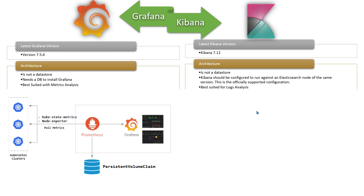When we talk about the architecture of Grafana, Grafana is a visualization tool — it is not a data store. When you install Grafana you also need some sort of data store to store all the data, and then you connect Grafana to that data store to visualize the data. By default Grafana is not going to store anything. To install Grafana you also need a database to keep Grafana-related application data. By default SQLite is available, and if you want you can also switch to MySQL.